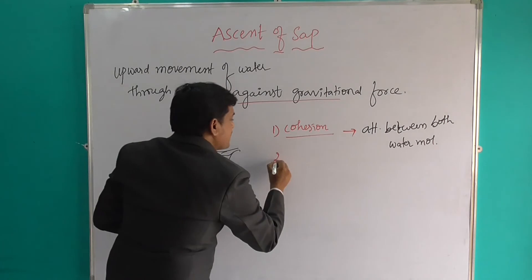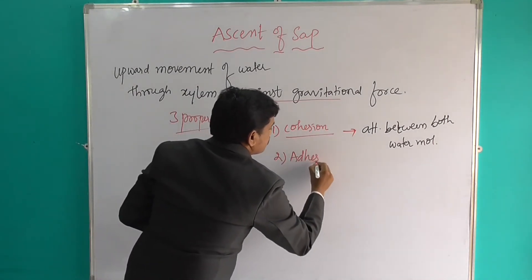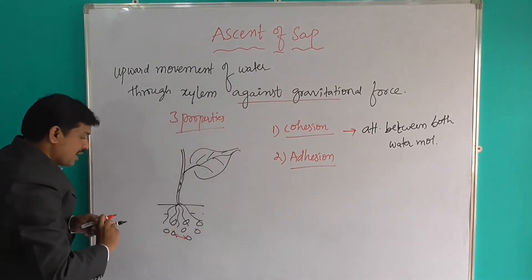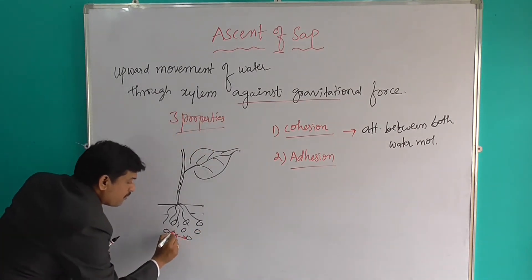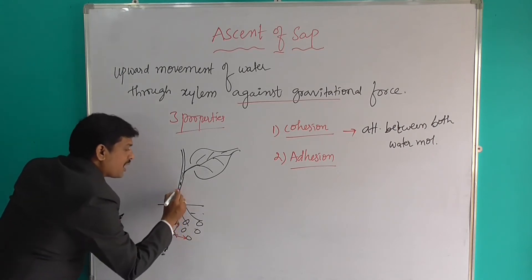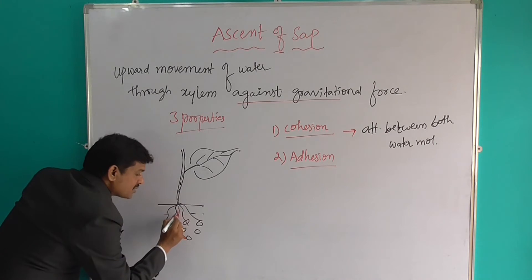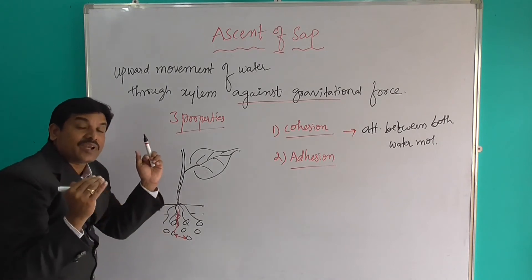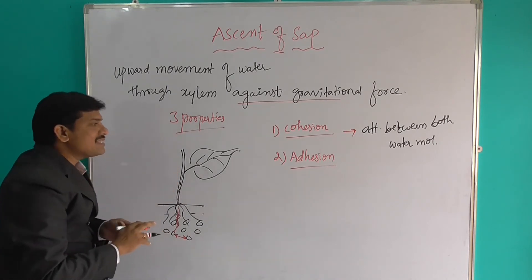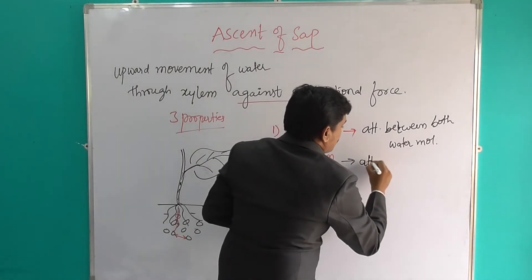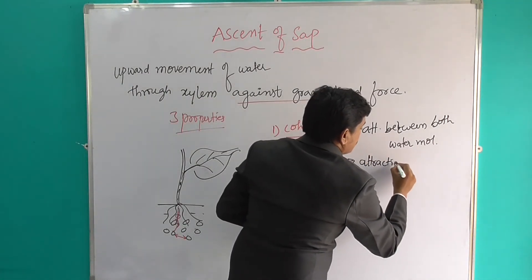The second property is adhesion. What is meant by adhesion? The attraction between water molecules and a polar surface. Root and shoot have a polar surface. The attraction between water molecules and that polar surface is called adhesion.